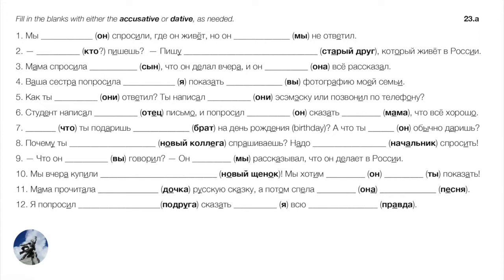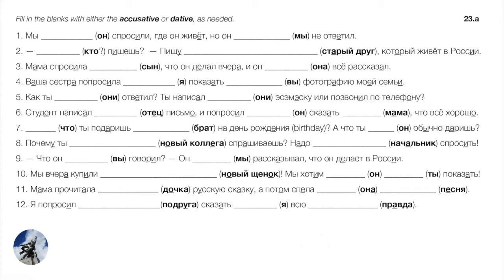Number three: mom asked her son what he was doing yesterday, and he told her everything. The first verb is an asking verb taking accusative: Мама спросила сына — animate accusative — что он делал вчера? And he told everything to her. The dative of она is ей: он рассказал ей всё.